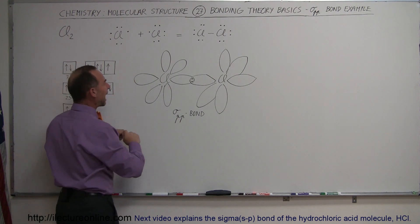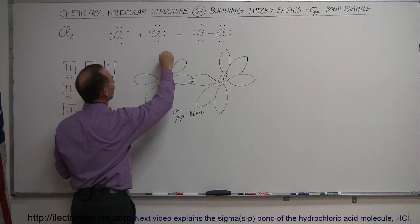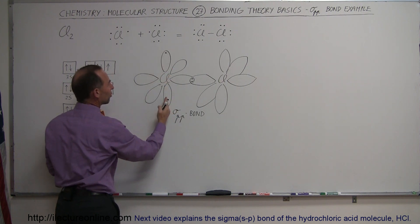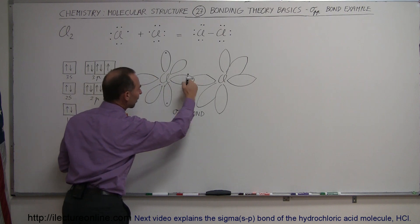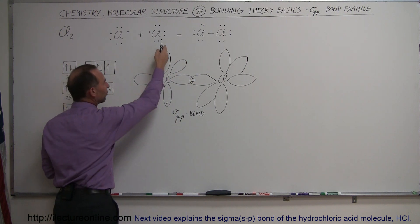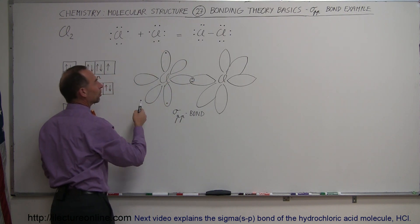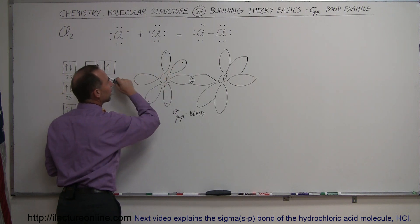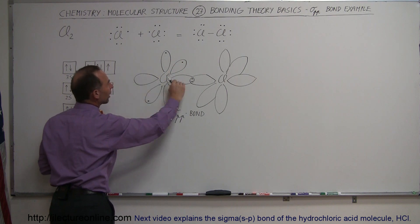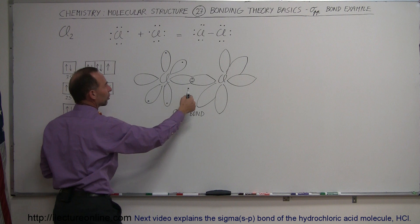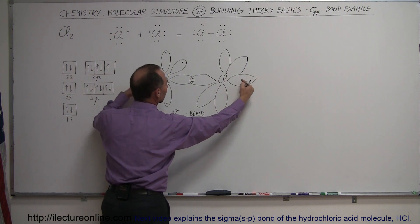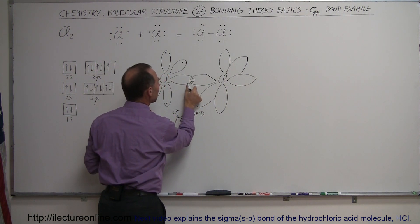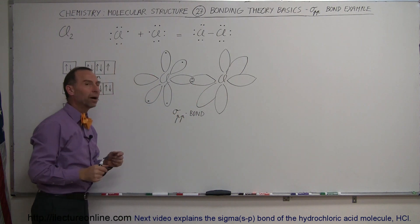All the other orbitals already have electrons in them. For example, in the z direction that orbital is already filled, and in the x direction that orbital is already filled. But in the y direction there's only one electron in each orbital, so they can come together, overlap, and form what we call a sigma pp bond.